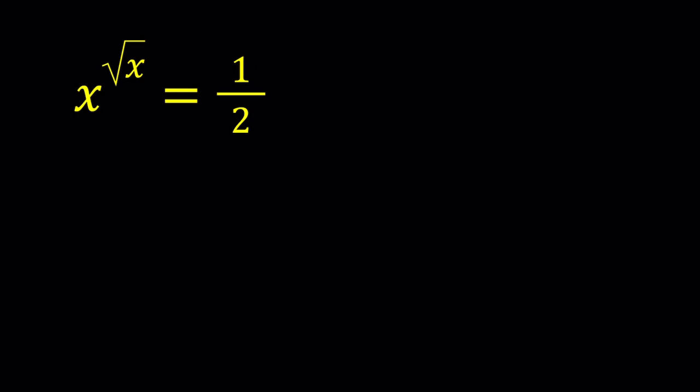We have x to the power square root of x equals one half. Sometimes people don't like the idea of guess and check. I don't know why. It's a problem solving method, it's valid. You guess and then check. Of course, if your check doesn't work, then your initial guess is incorrect. So let's get started.